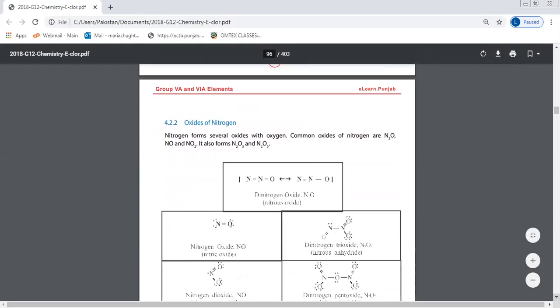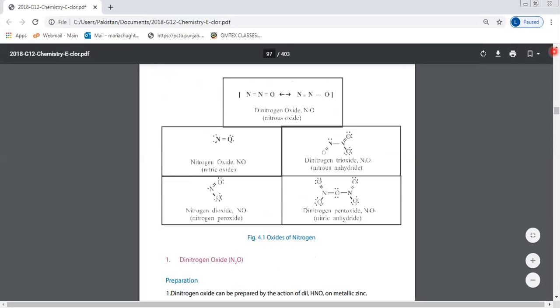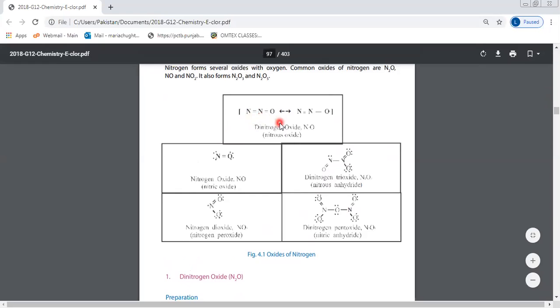Oxides of nitrogen: nitrogen forms several oxides with oxygen. Common oxides are N₂O₅, N₂O, NO, NO₂, and N₂O₃. This is N₂O: N double bond N double bond O. This is dinitrogen oxide or nitrous oxide.